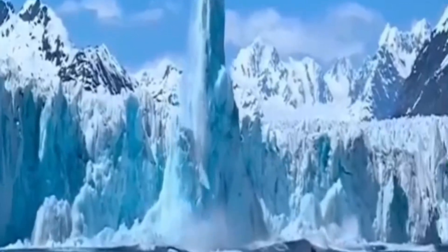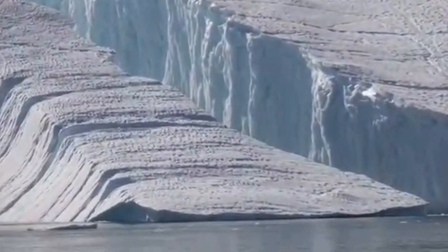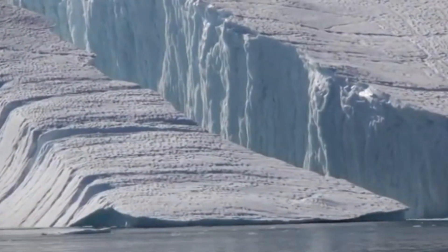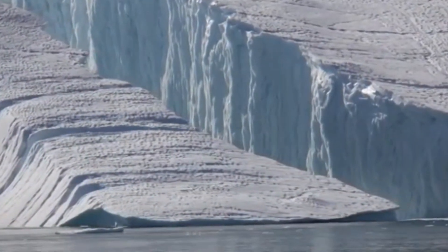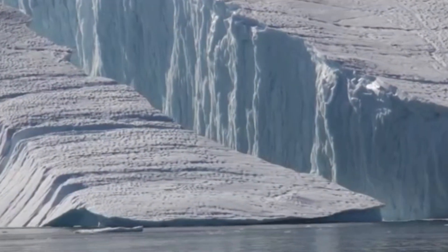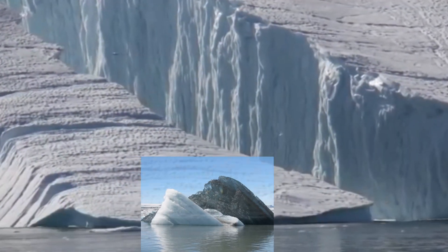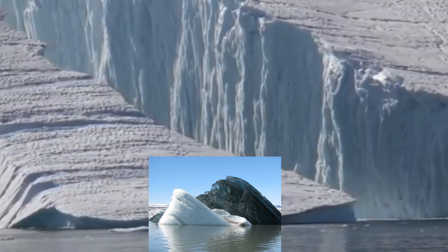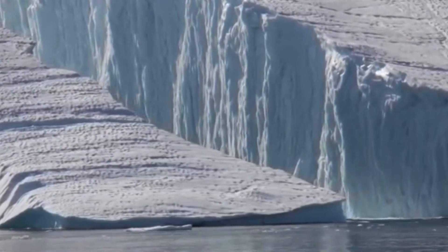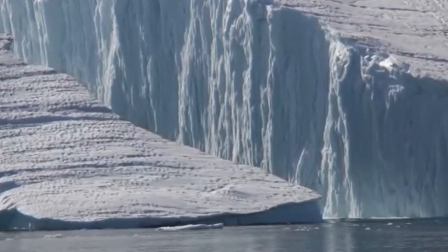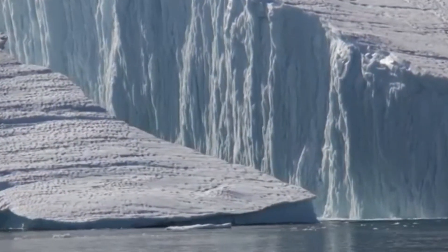Green-colored icebergs are formed by iron oxides and rock dust. Icebergs that form from glacier ice contain organic and inorganic particles that add hues of green to the ice. Shiny black icebergs are made of defect-free marine ice. They are black because there is nothing to scatter light.